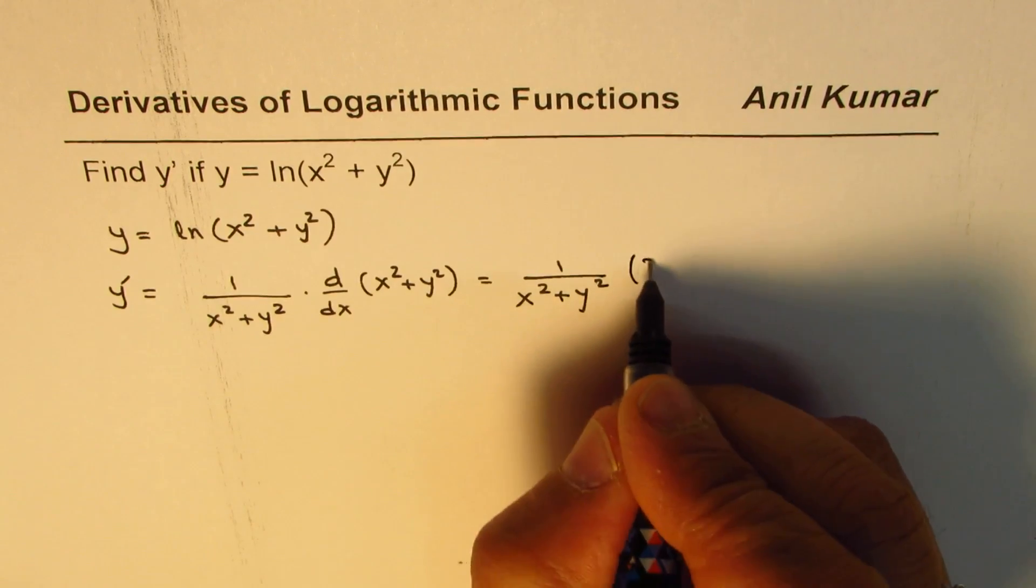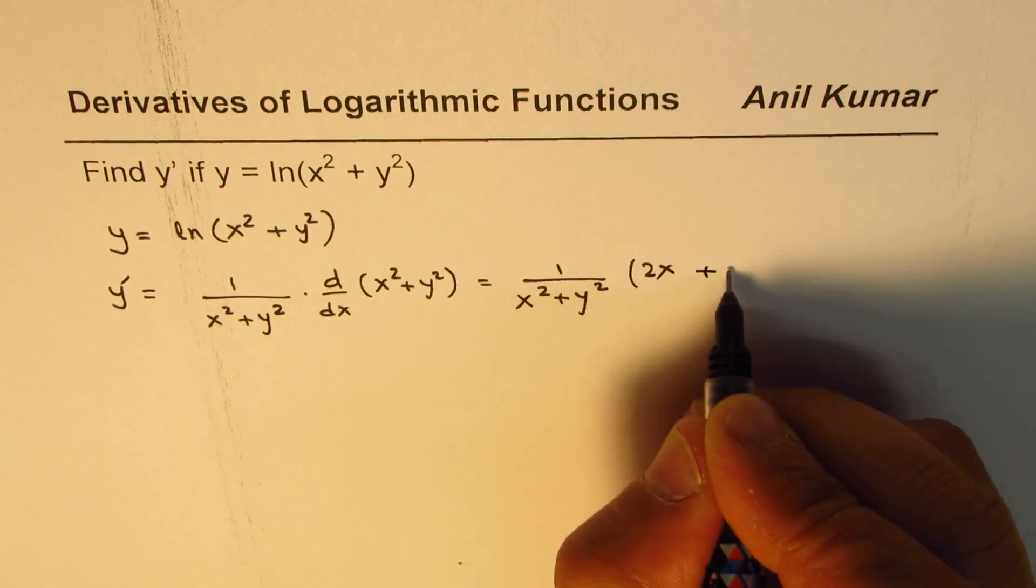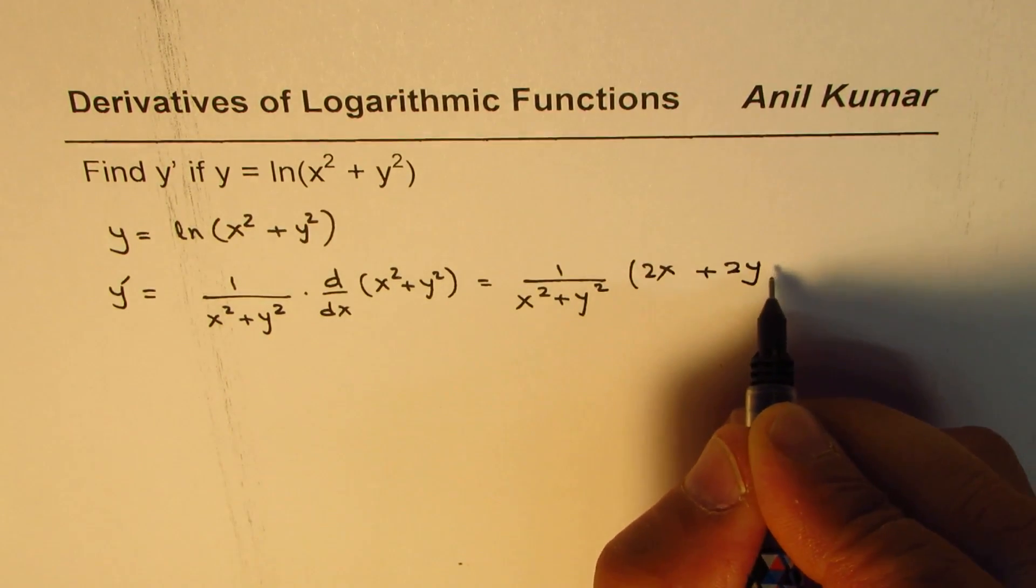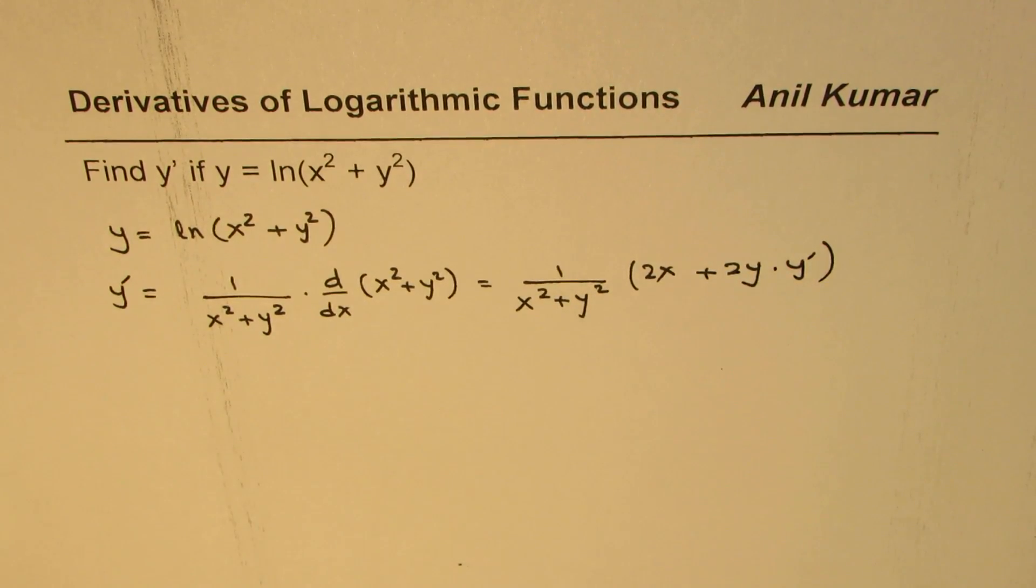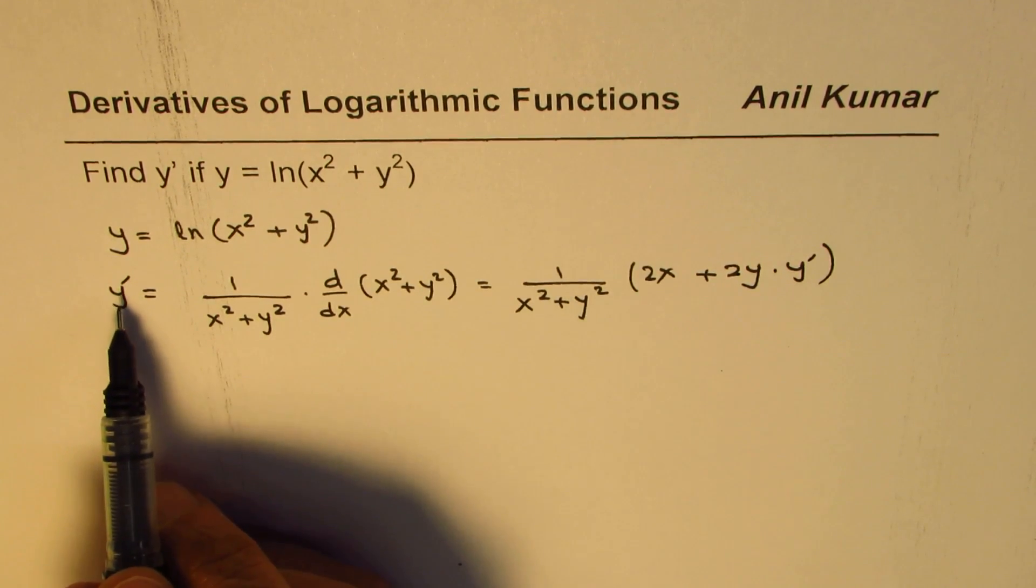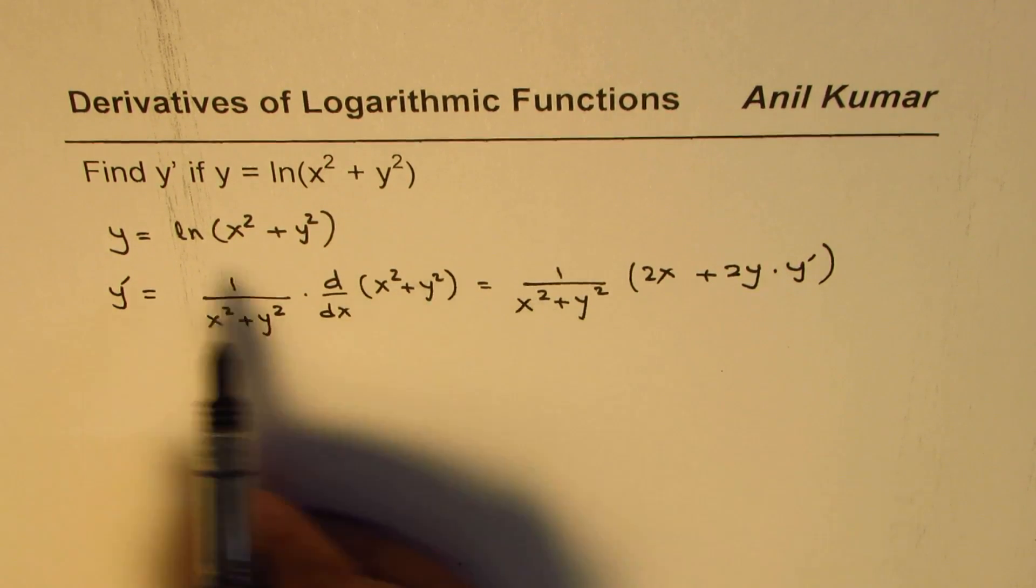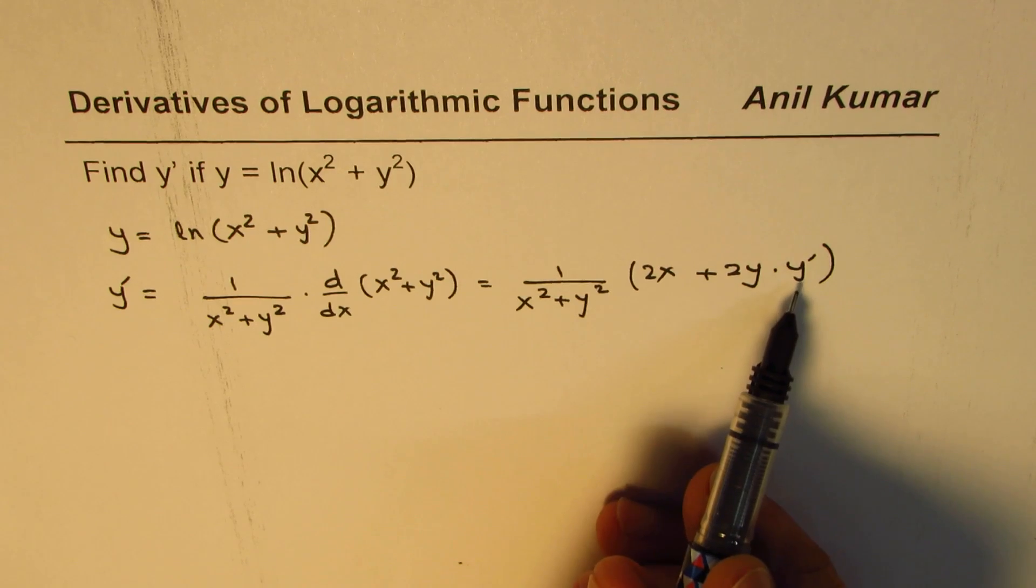Derivative of x squared is 2x and derivative of y squared will be 2y dy dx. We could write this as y prime. So that becomes the derivative of this function. Now we need to find y prime or y dash, so we need to cross multiply and isolate the derivative.